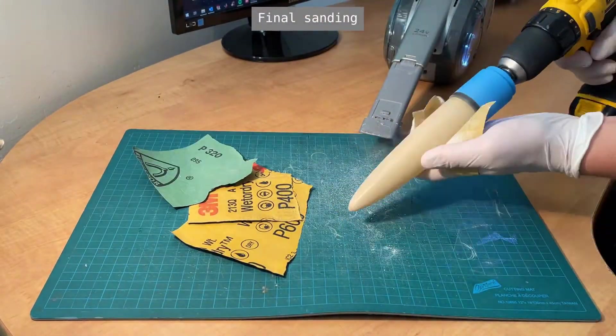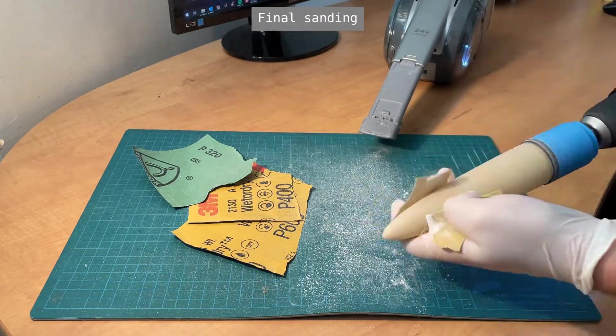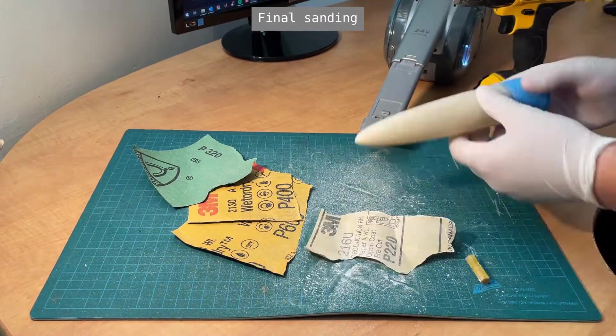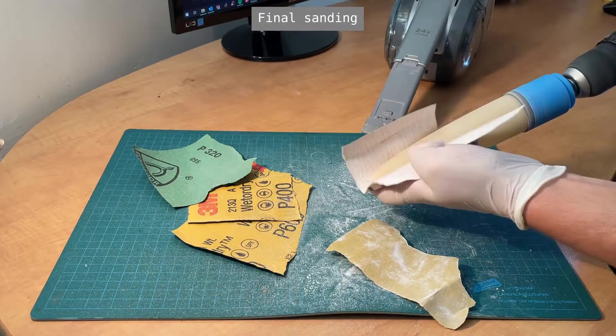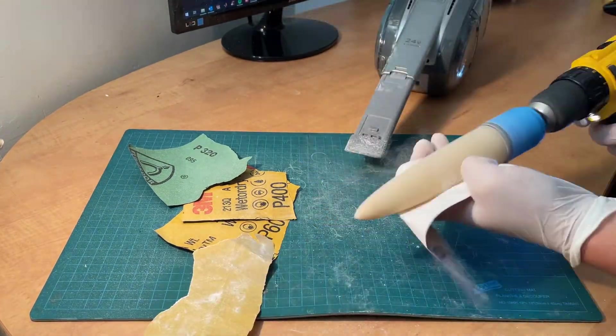For now, using the same tool as we had last time, sanding can begin at 120 grit until the surface is even and all the shiny spots have disappeared. We can then go up incrementally until 600 grit. Try not to heat the cone up too much during sanding as the epoxy can ball up and ruin the finish.